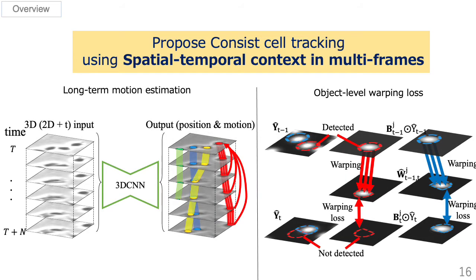In this paper, we propose a cell tracking method that can effectively use long-term spatio-temporal context in multiple frames. To use long-term spatio-temporal context, we propose long-term motion estimation and object level warping loss.